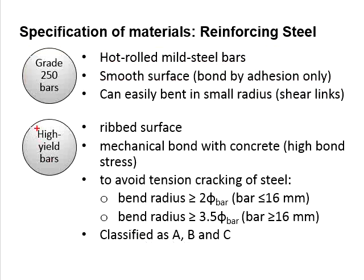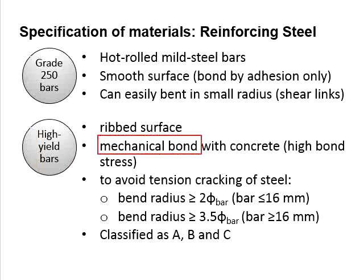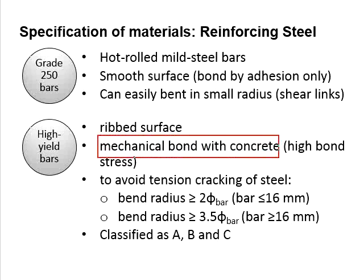High yield steel bar has ribs on the surface. These ribs encourage mechanical bond between the concrete and the steel so that high bond stress is developed.